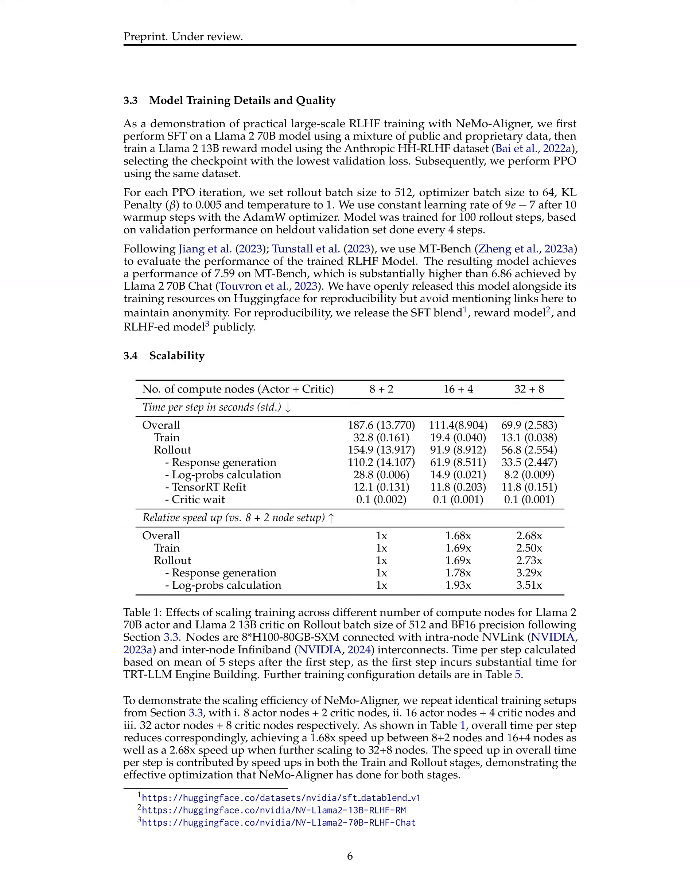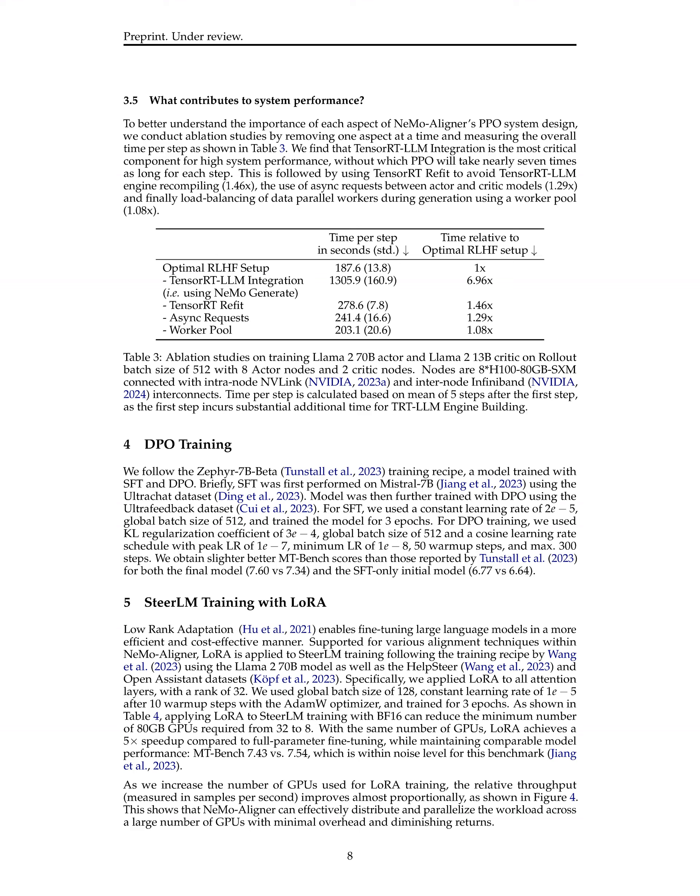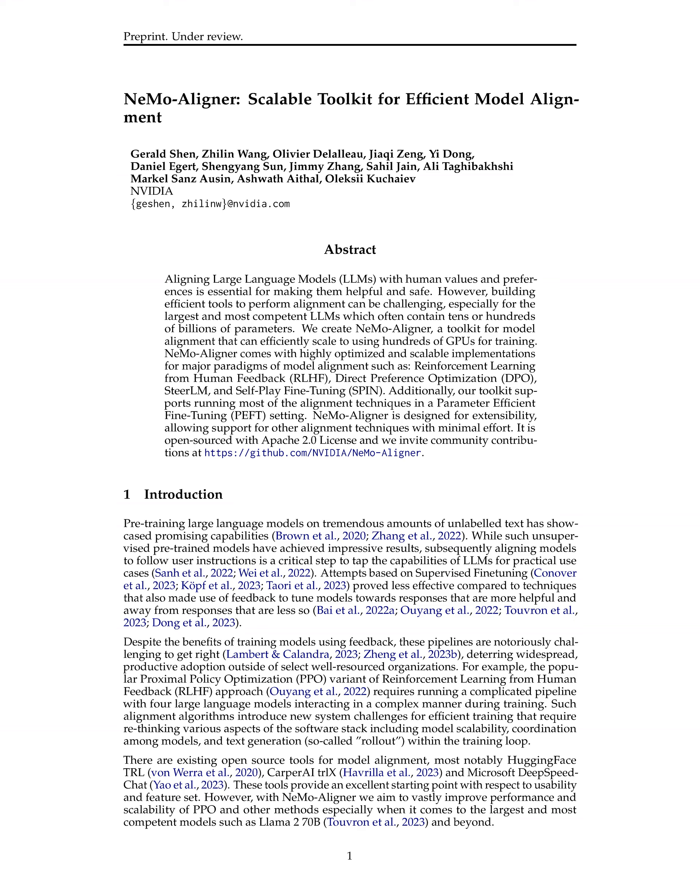The performance of the trained RLHF model is evaluated using the MT Bench metric, achieving a score of 7.59, which is significantly higher than the score of 6.86 achieved by the LLAMA-2 70B chat model. Additionally, scalability tests are conducted by repeating training setups with varying numbers of actor and critic nodes. Ablation studies are also performed by systematically removing different components of the system design to measure their impact on overall training time per step.